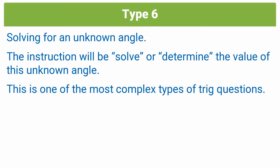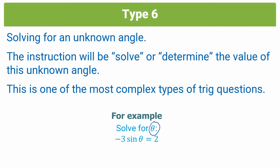In grade 11 and 12, this is one of the most complex types of trick questions, because your angle isn't confined to the first quadrant anymore like it was in grade 10. Your angle could be in quadrant 2, 3, or 4, and you also have to find a general solution. An example of a type of question you could be getting is: solve for theta, where the unknown angle is given by the equation minus 3 sine theta equals 2.